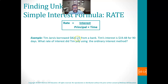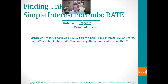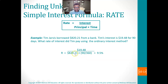Tim Jarvis borrowed $820.21 from a bank. The interest is $1,948 for 90 days. What rate of interest did Tim pay, using the ordinary interest method? We're looking for rate, and rate equals interest divided by principal times time. So: principal times time is 820.21 times 90 out of 360. Then divide $1,948 by that. The rate is 9.5%.